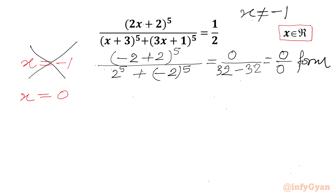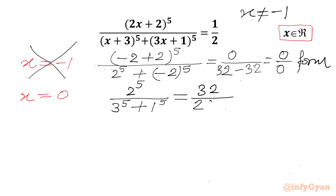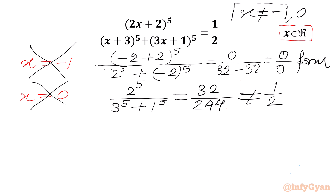Now we will plug in x equal to 0 into our equation. We will get 2^5 in the numerator and 3^5 plus 1^5 in the denominator, which will be equal to 32 over 243 plus 1 = 244, which is not equal to 1/2. So for our equation, x equal to 0 cannot be a solution.